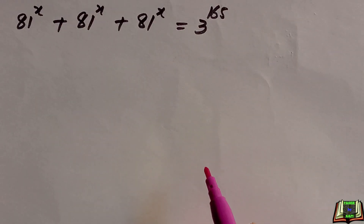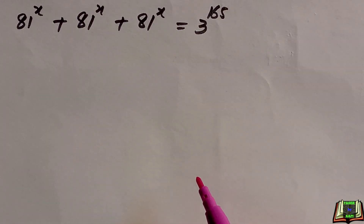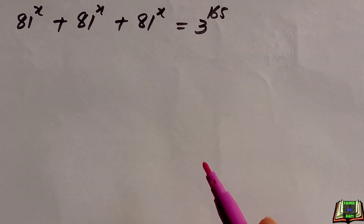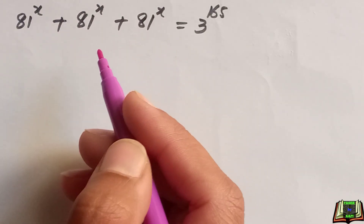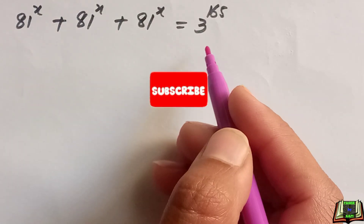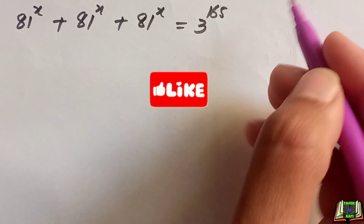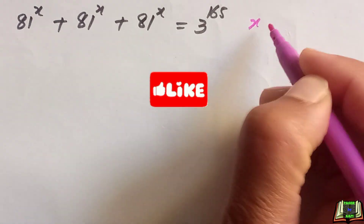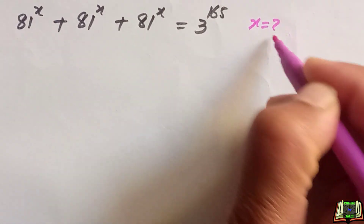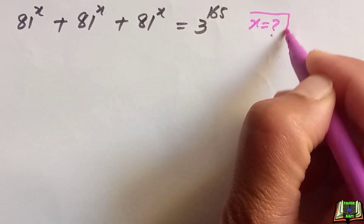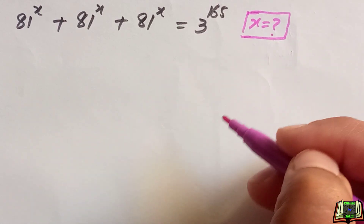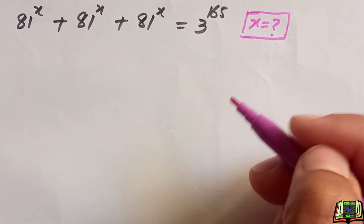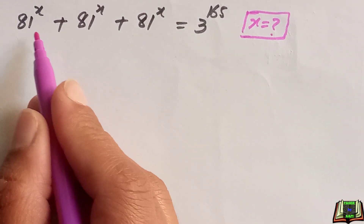Welcome back. In this video tutorial we will see another exponential equation. If 81 to the power x plus 81 to the power x plus 81 to the power x is equal to 3 raised to the power 165, how do we find x? Let's get started.